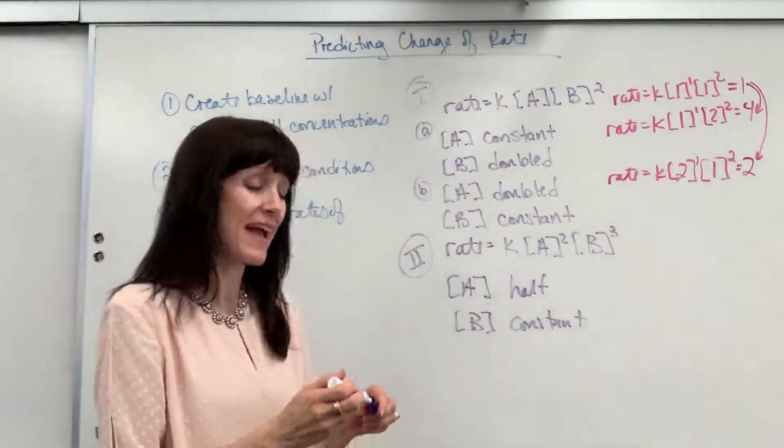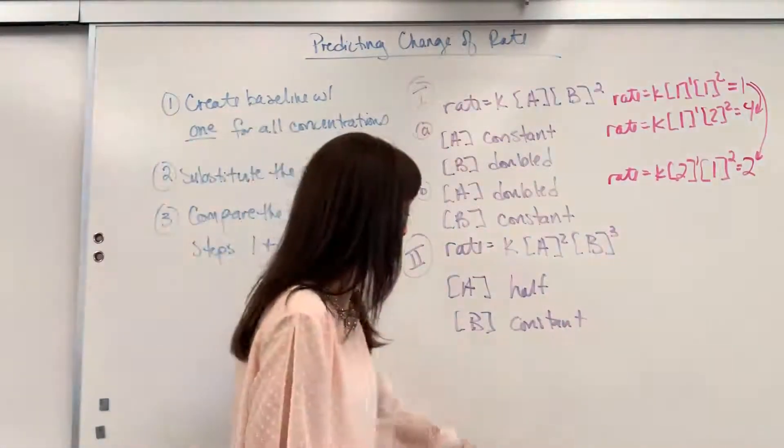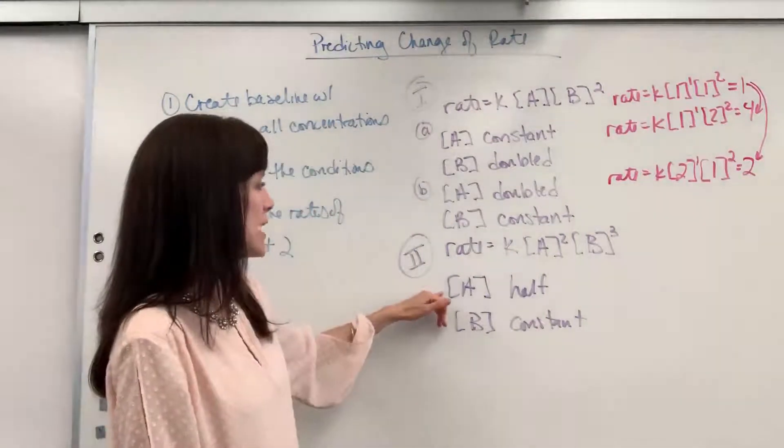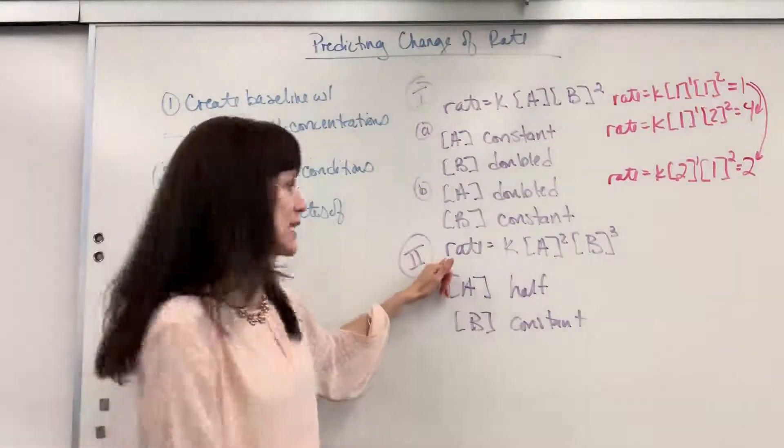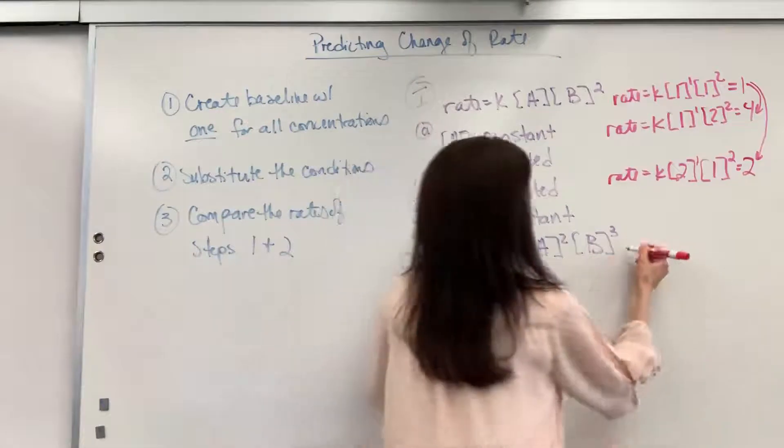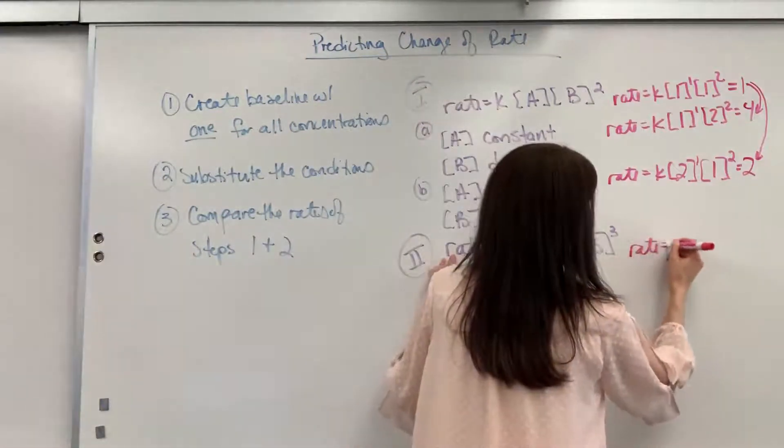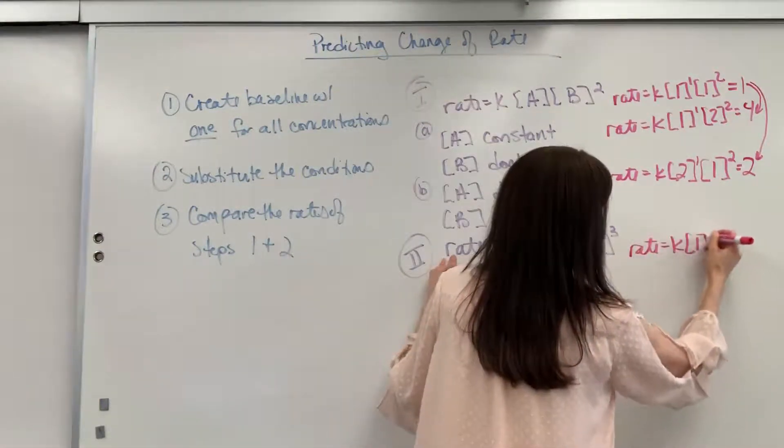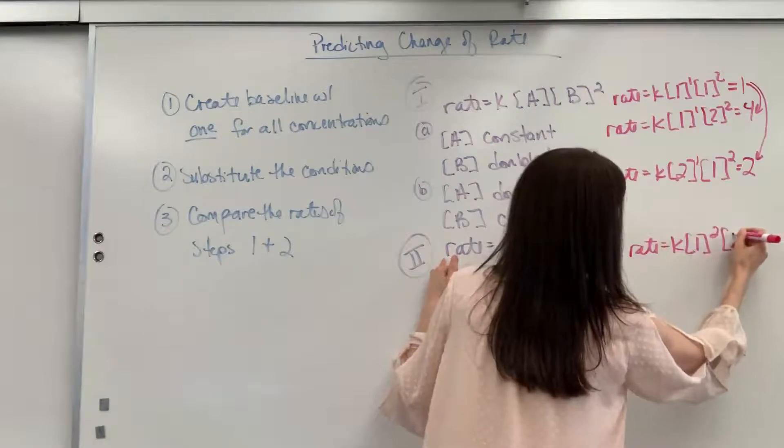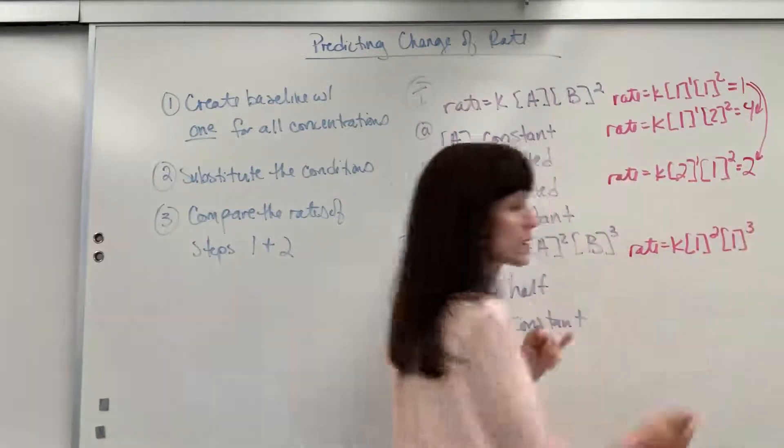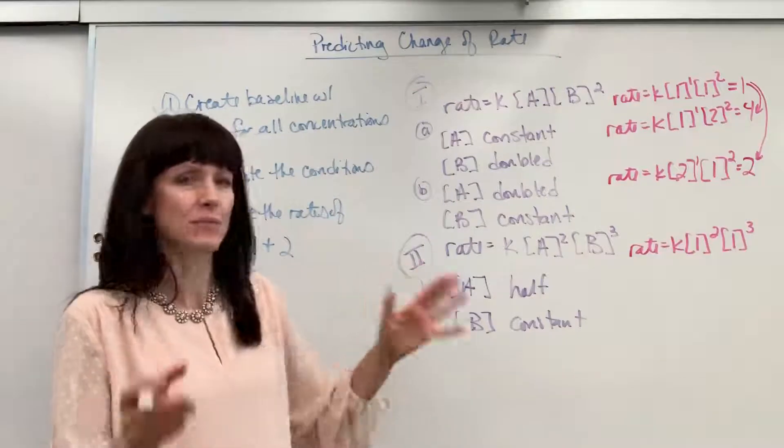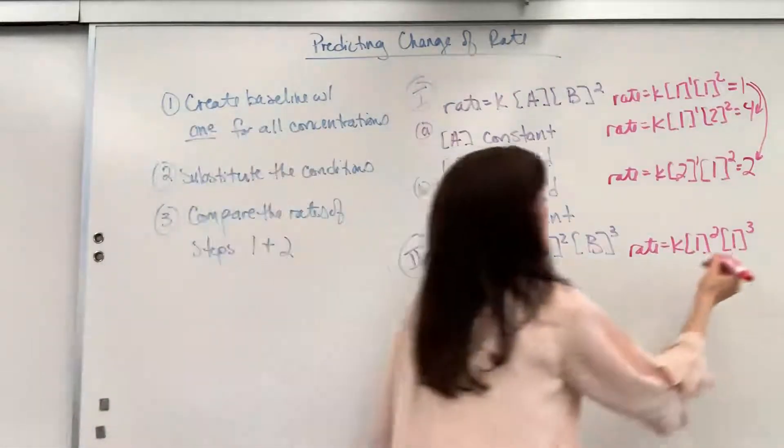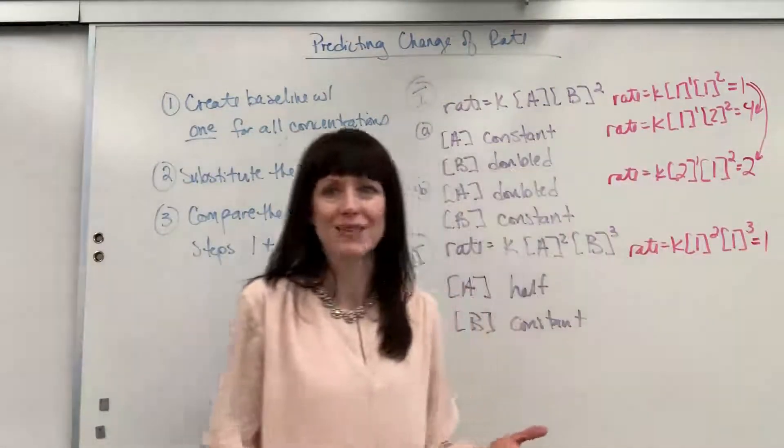And let's this time take B, and we'll hold that one constant. Okay, so let's see what happens if I half the concentration of A. Well, again, we start with the baseline. Let's put 1 in for everything. So rate will be K, 1 to the second order, and 1 to the third order. That's setting everything equal to 1. My A and my B, I'm creating this baseline. That will give us a rate of 1.